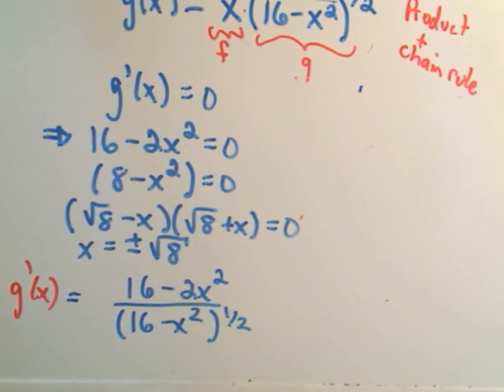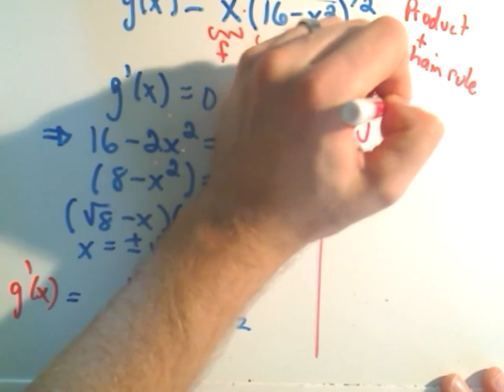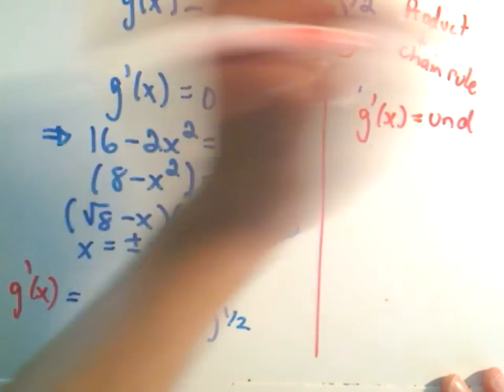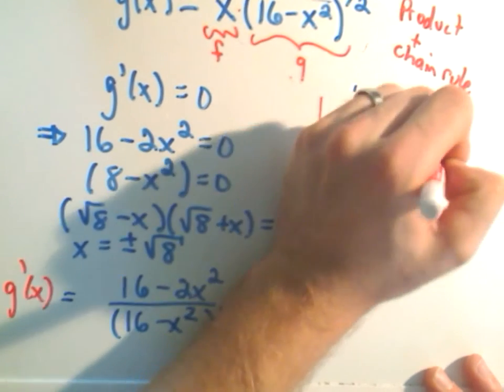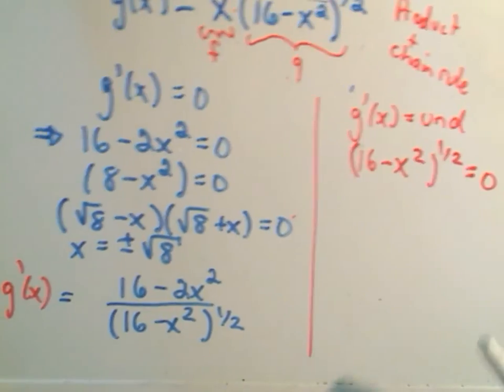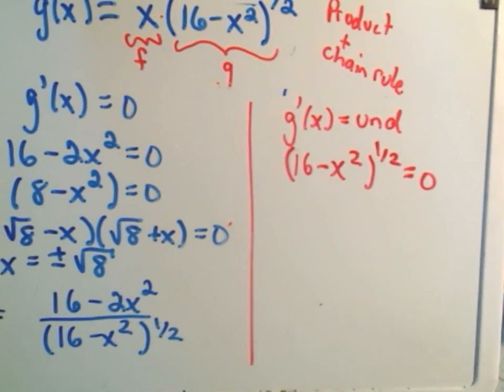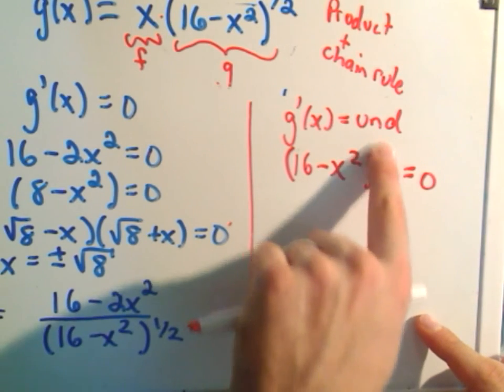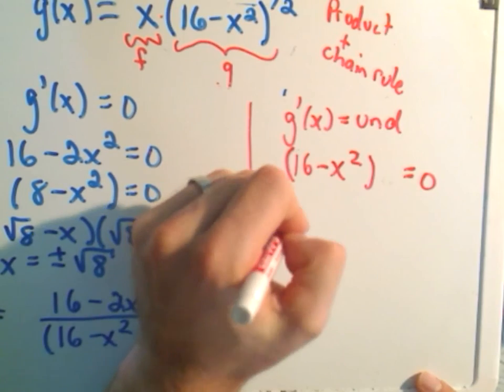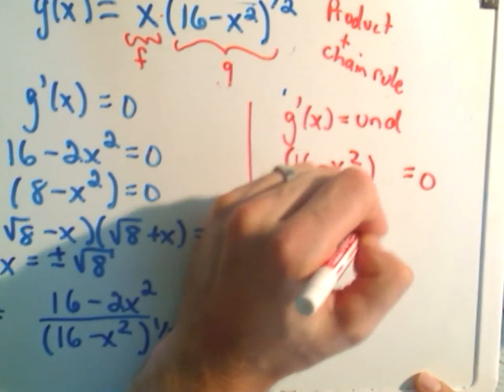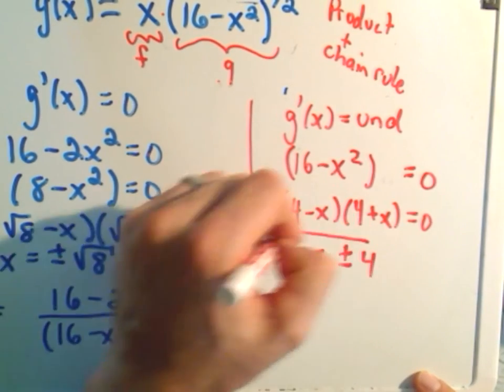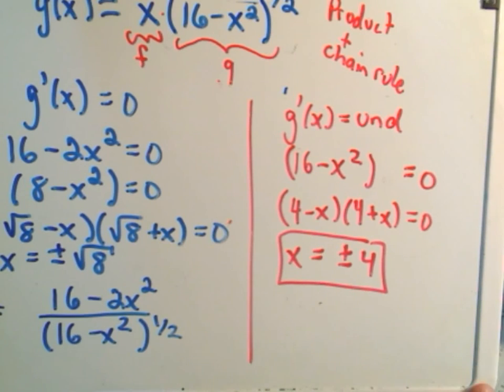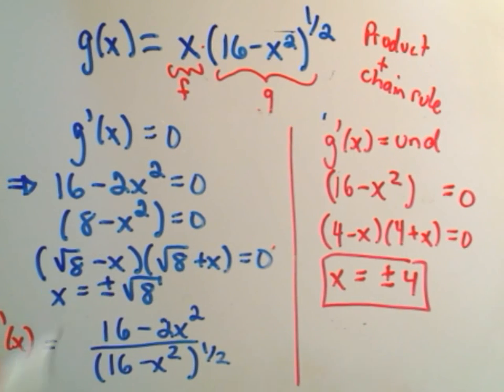And then when we look at setting the denominator equal to 0, because that'll tell us where the derivative is undefined. Well, then we'll have 16 minus x squared to the 1 half equals 0. If we square both sides, it'll get rid of the square root. And then we simply are left with 4 minus x, 4 plus x after we factor. And that says we get x equals positive and negative 4. So we have to check these to make sure that they're in the domain of the original.